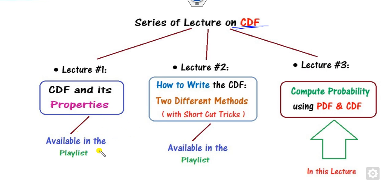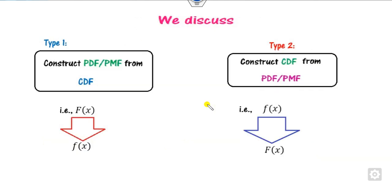The last two lectures, which are available in my playlist, covered various properties and how you can write the CDF with the help of the shortcut method. The objective of this lecture is: first, we will construct the PDF when the CDF is given (CDF to PDF); second, we will construct the CDF from the PDF, and then we will try to solve these problems.